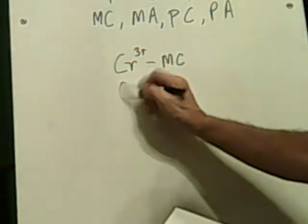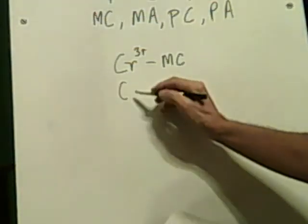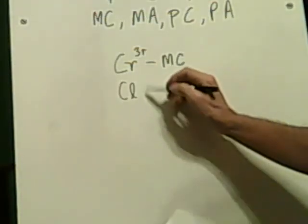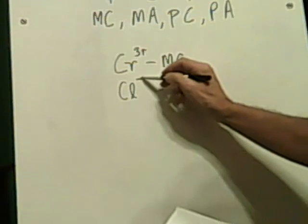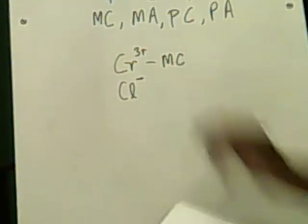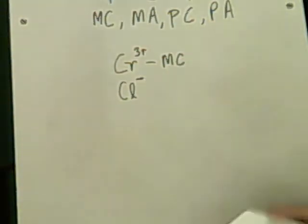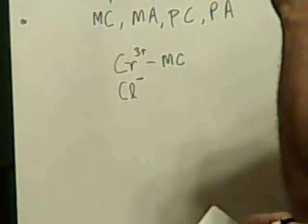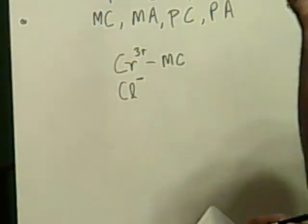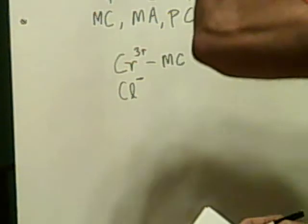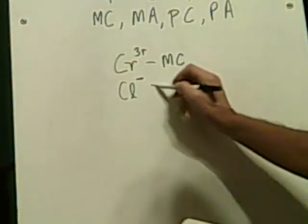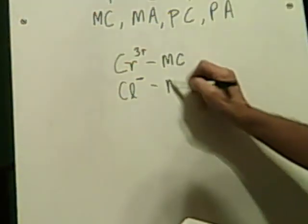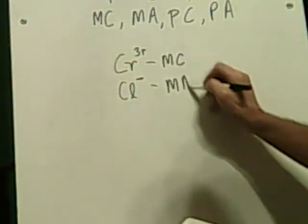The second one is chlorine, Cl minus — that's minus 1. Chlorine is a halogen in the 7th column. That's monatomic; it's an anion.